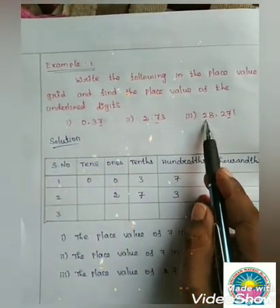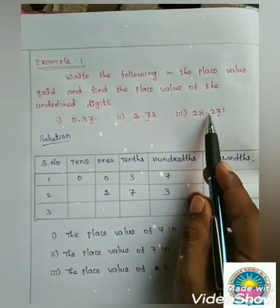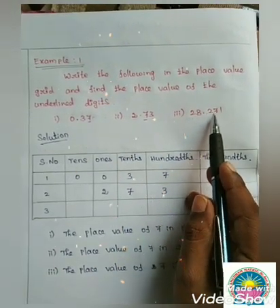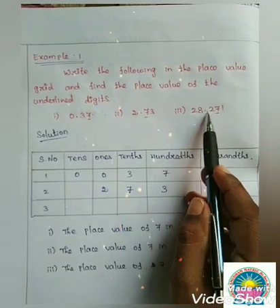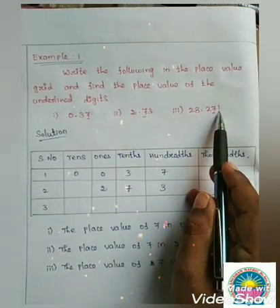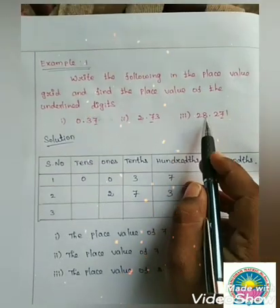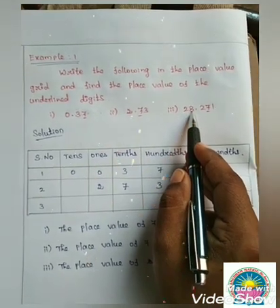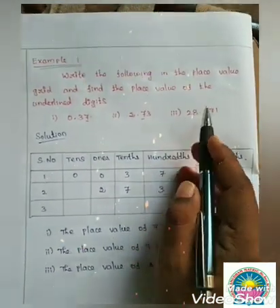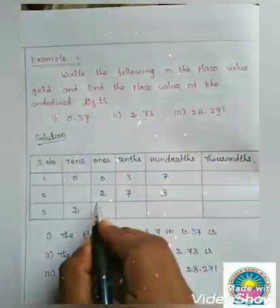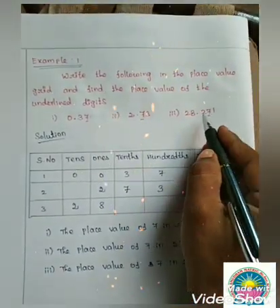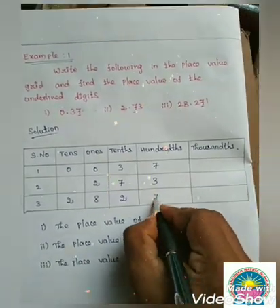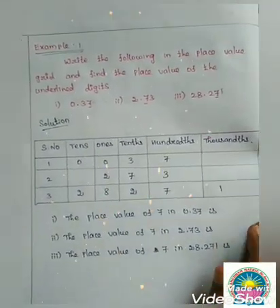Third one: 28.271. For the point, the numbers to the left are read digit by digit. So: 8 is in the ones place, 2 is in the tens place. To the right of the point, tenths place is 2, hundredths place is 7, thousandths place is 1. Do you understand this?